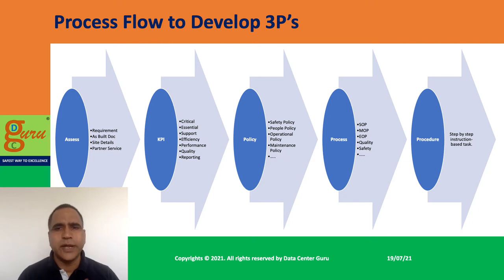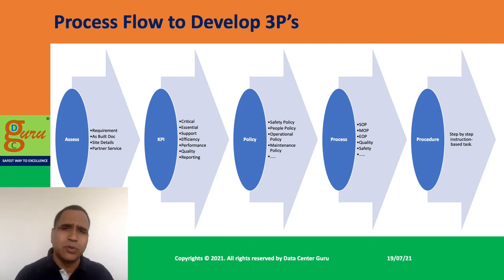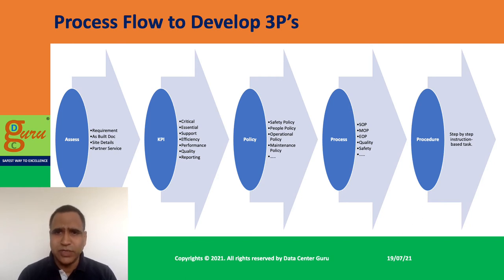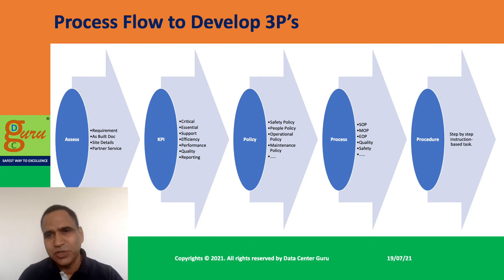Some of the policies to develop include safety policies, people policies, operational policies, maintenance policies, and housekeeping policies — and there are many more. Based on these policies, once you develop them, you need to break them down. How do you meet those policies? How do you comply with those rules? So you write processes.